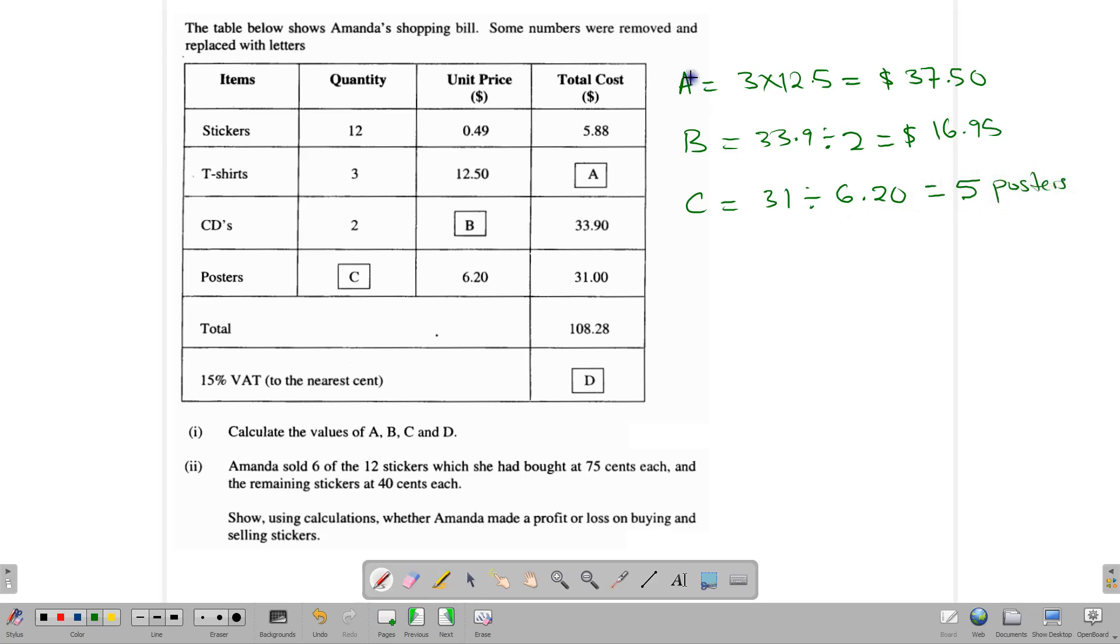So we have found our A, B, C. D is just to apply 15% VAT, value-added tax, to this number. So D is equal to 15%, that's 15 over 100, multiplied by 108.28. Basic calculator work. And once you type that into your calculator, you're going to get $16.24. So A, B, C, D, all done.